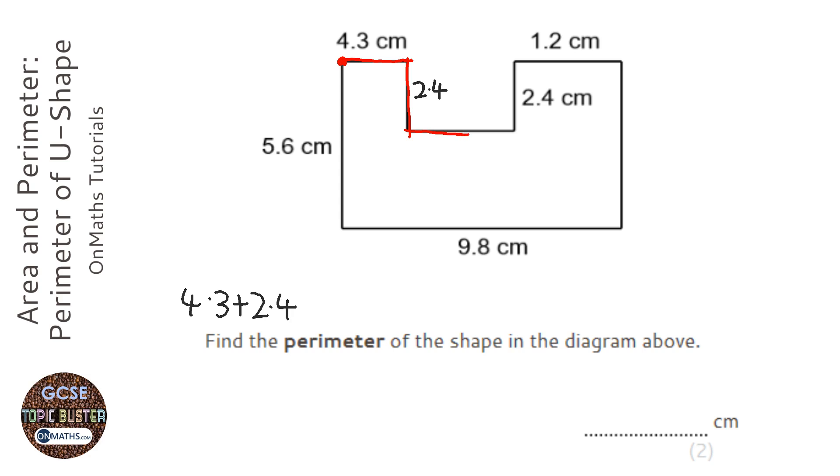Next we need this length here. Now this length here, if we have a look at the 9.8 at the bottom, the total width is 9.8. We've got 4.3 of it used here, 1.2 of it used here, so we've got to find out what's left. So I'm going to do 9.8, take away 4.3, take away 1.2, and it leaves 4.3, so that's going to be 4.3 there.